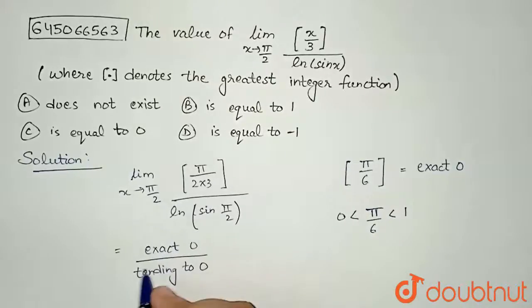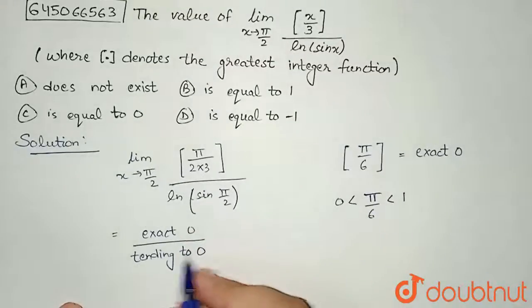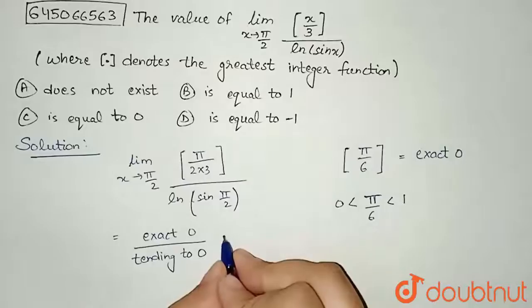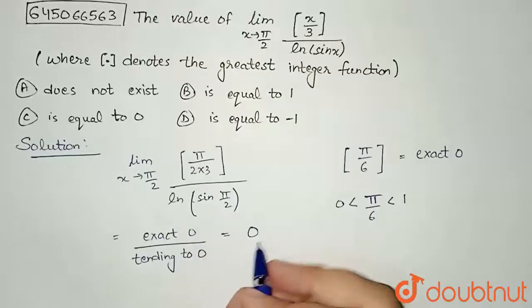My denominator will be tending to 0, not exactly 0. Since in the numerator I have exactly 0 and in the denominator it is tending to 0, I can write that the limit given to me is equal to 0, because my numerator is exactly 0.